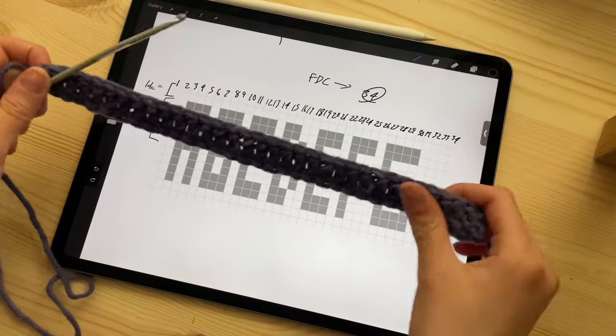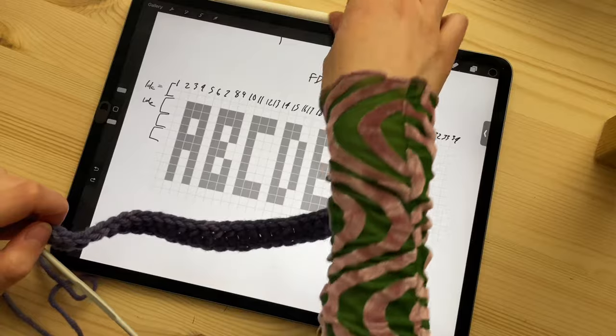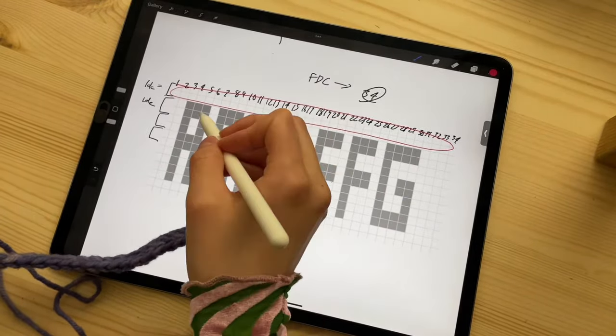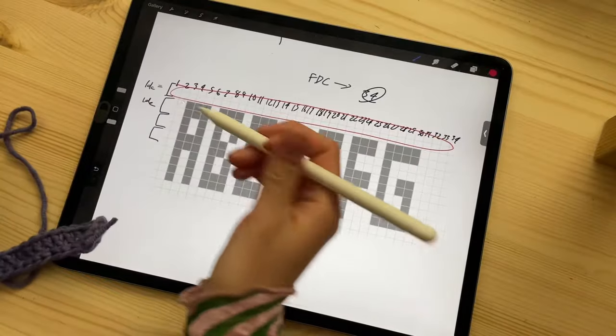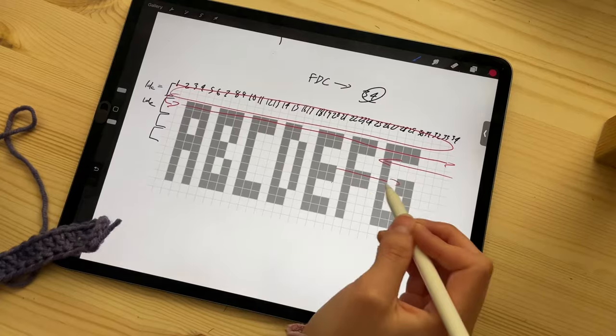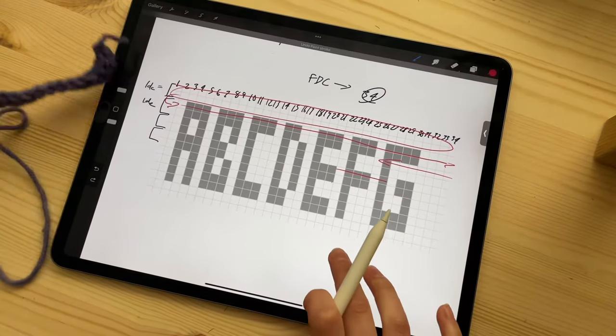So, this row that I've created, the foundation double crochet row, is essentially this row up here. So, after that, we're going to start crocheting along this way and then go back, and then go back, and then go back. You kind of get my point.